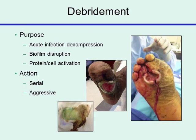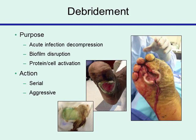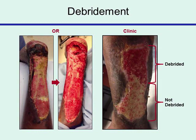Debridement is a key element in limb salvage and appropriate wound and infection care. The purpose is to deal with acute infection and, in chronic wounds, to disrupt the biofilm, removing it from the wound depth and surface, and dealing with protein and cellular activation through serial debridement. In our institution, a person with an infected problem wound will go to the operating room every three days as an inpatient, with weekly or more frequent debridements in the outpatient environment. Our debridements, especially in the operating room, are aggressive excisional debridements removing the wound margin, the senescent cells, and appropriately ridding the wound of infection and biofilm.